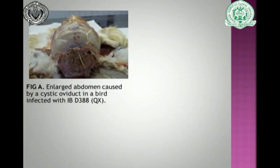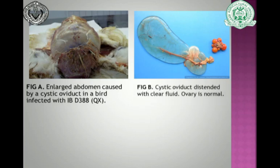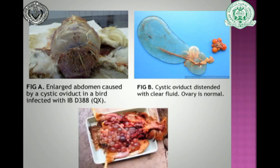Another picture shows an enlarged abdomen caused mainly by cystic oviduct, also attributed to the QX strain. A picture of the cystic oviduct shows it distended with clear fluid while the ovary appears normal. A third image shows multiple cysts in a bird also infected by the QX strain.